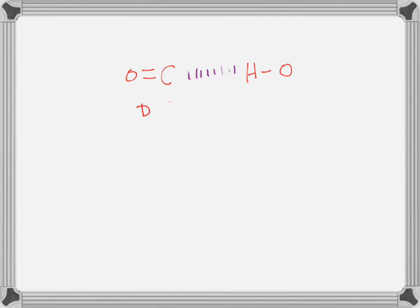Which is more electronegative — carbon or oxygen? Oxygen. You don't need to know the exact electronegativity value, but you should remember the trend: the upper right-hand corner of the periodic table is the most electronegative. So fluorine, oxygen, nitrogen — carbon is next. Carbon has to have a lower electronegativity than anything next to it.